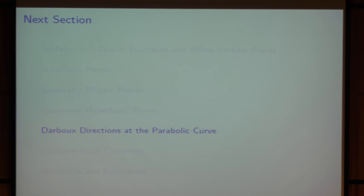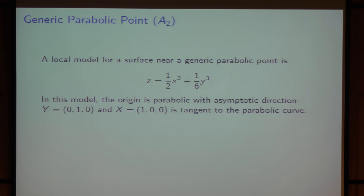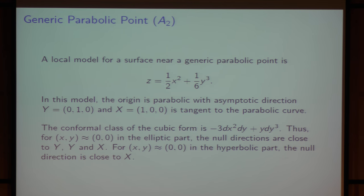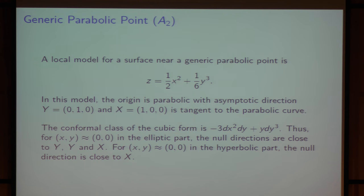It's important to understand what happens at the parabolic curve. At the generic point, the A2 point, the origin is parabolic, the asymptotic direction is (0,1,0), and (1,0,0) is tangent to the parabolic curve. The conformal class of the cubic form is given by a specific formula. For x, y close to (0,0) in the elliptic part, the null directions are close to y, y, and x. In the hyperbolic part, the null direction is close to x. Importantly, at least one direction is tangent to the parabolic curve at these points.